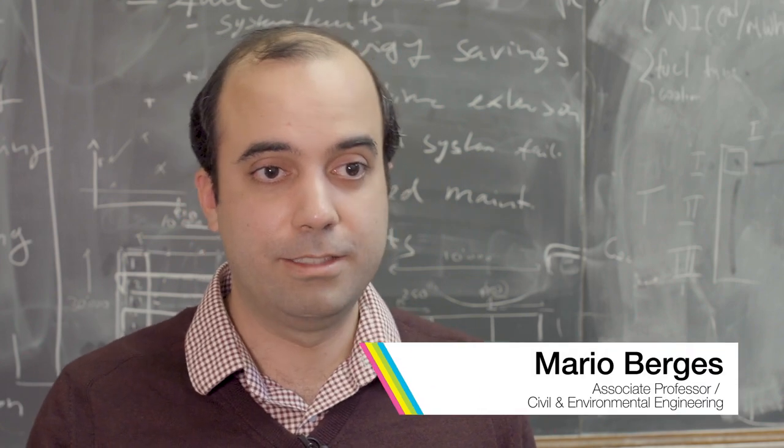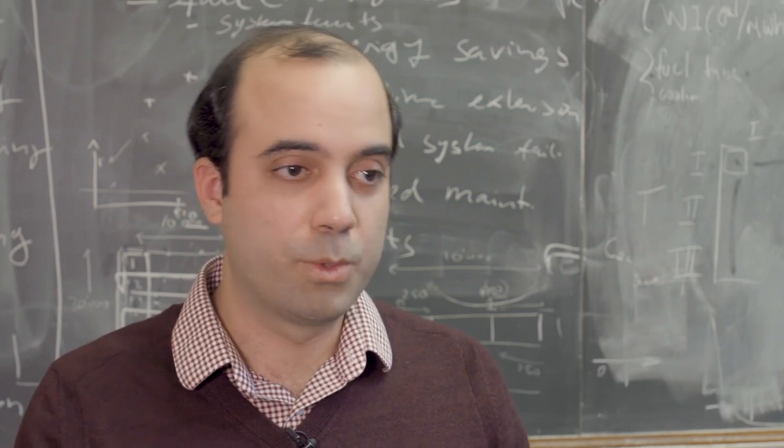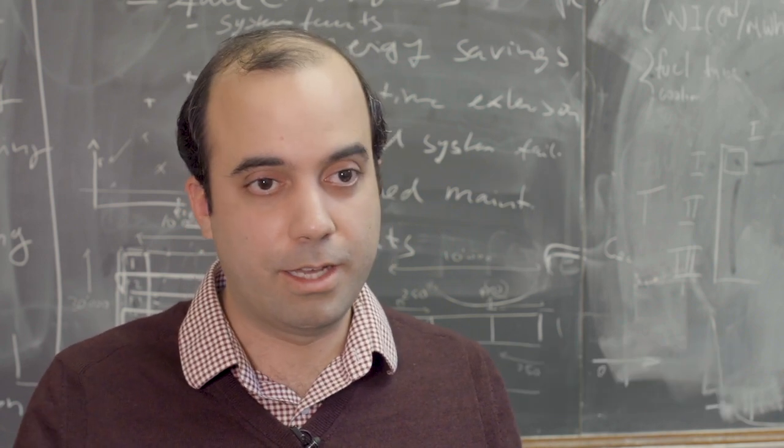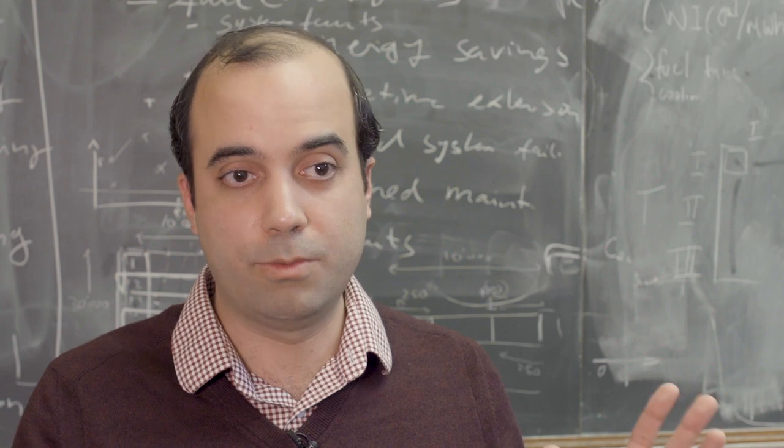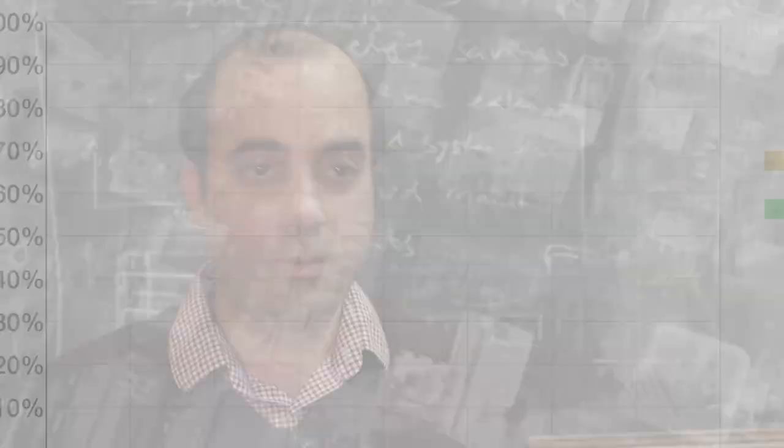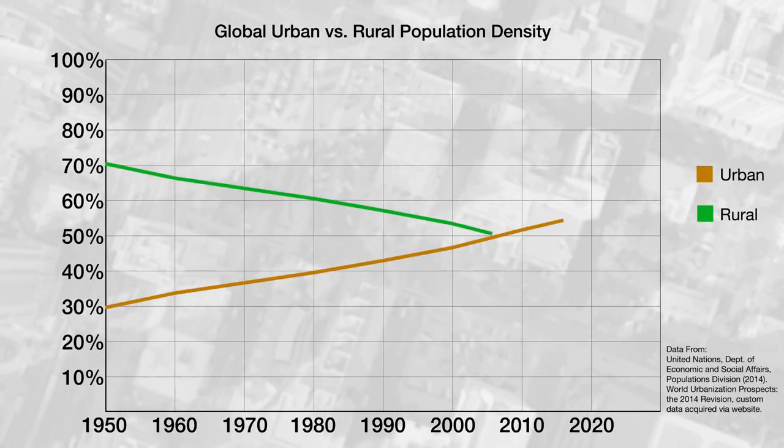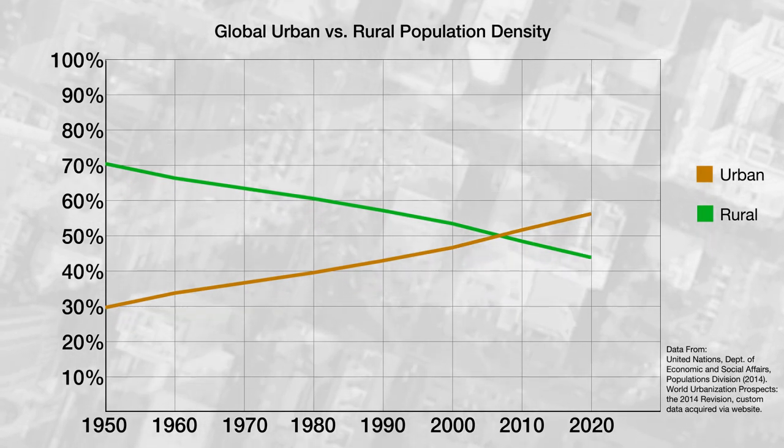One is that they're aging and crumbling, and we see it in the news. The second is that urban density is increasing, so there's more stress put on these systems. Rural densities have stayed constant over the years, whereas urban density is increasing. We just shot past the time when they were both equal, and that's going to continue to be a problem.